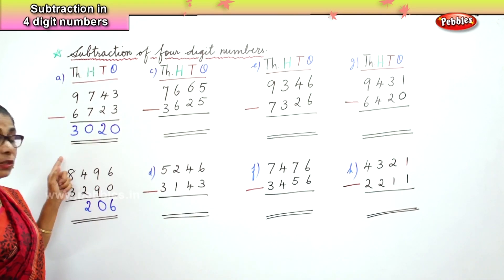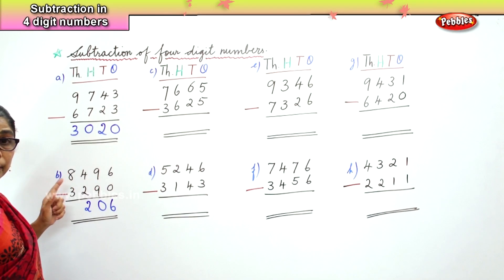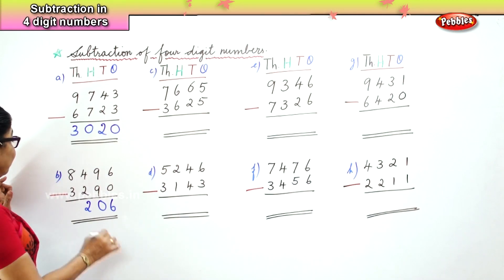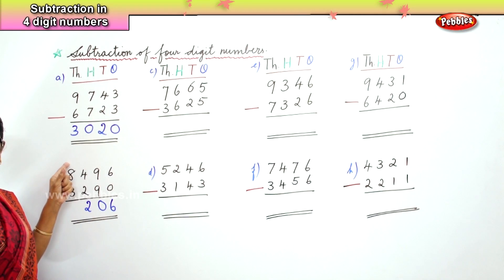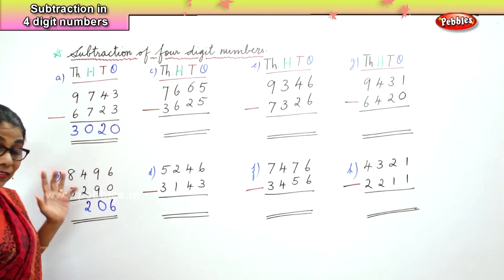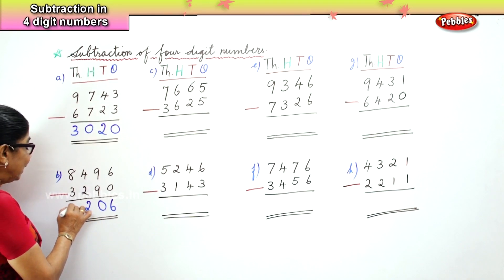In the thousands place, you have 8,000 minus 3,000 — 8 minus 3 is 5.